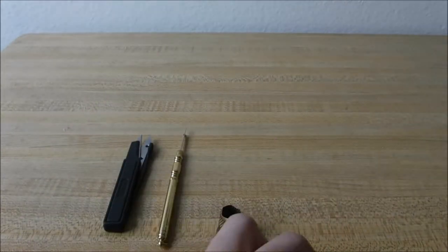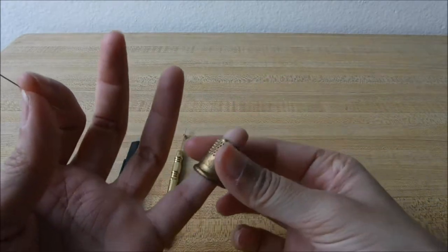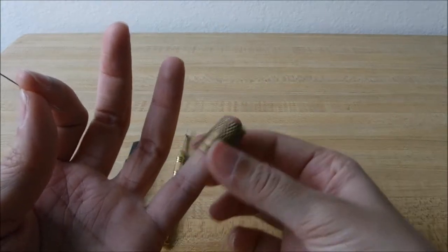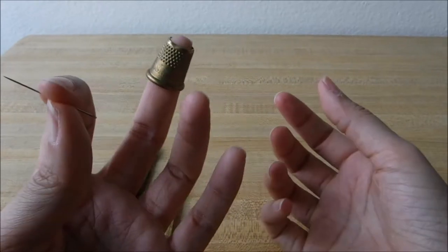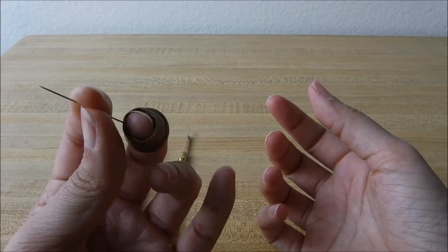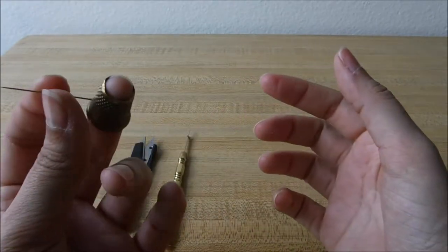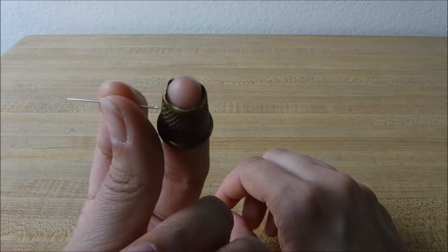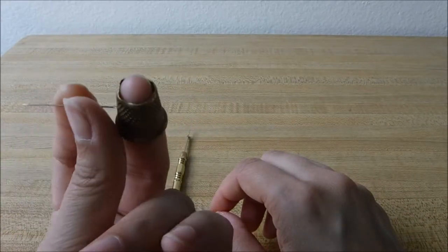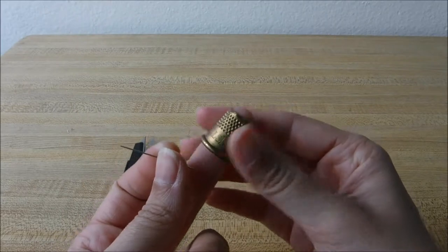I do also have a tailor's thimble. This one usually goes on the pinky. It's the same thing. It pushes that needle through when you're using small needles. My fingers are sticks, so I just use it on my middle finger. It's going to provide the same protection for your finger. So it's really important to get a thimble.